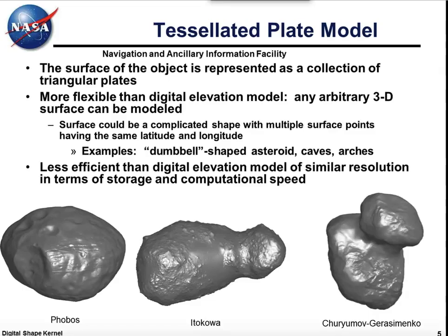Everyone's familiar with tessellated plate models. One of the main characteristics is that they can represent shapes that are not spherically parameterizable — in other words, for a given direction emanating from the origin, there can be multiple surface points. In the DSK system, there are very weak requirements on what kind of shapes can be accommodated. These shapes need not even be connected. The only requirement is that for every plate in the model, there's an outward surface normal direction defined.